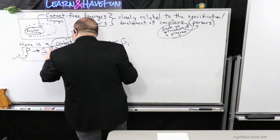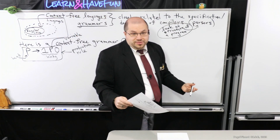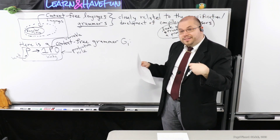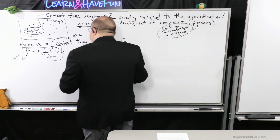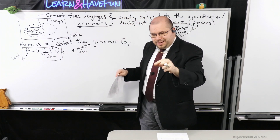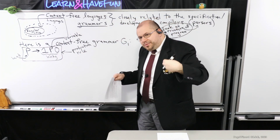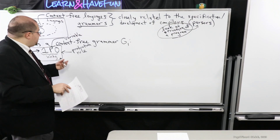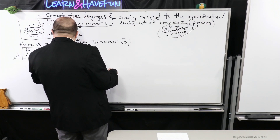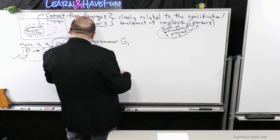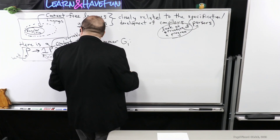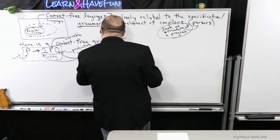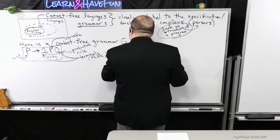I also have other symbols here—these are examples of what we call terminals. You could think of these, in terms of our discussions about automata, as input symbols. Strings that consist of terminals are the ones we're really interested in. We're going to apply these production rules to end up with a string that consists of these terminals at the end. The symbols like one and zero here are examples of terminals—think input symbols.